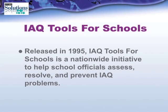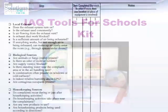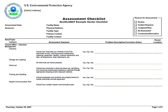Released in 1995, IAQ Tools for Schools is a nationwide initiative to help school officials assess, resolve, and prevent IAQ problems. It includes an IAQ Tools for Schools kit with a CD, chart, and checklists. Another program is the Healthy Seat program — a computer program that includes 400 regulatory and voluntary assessment standards, and also offers a starter program containing the top 90 assessment standards.